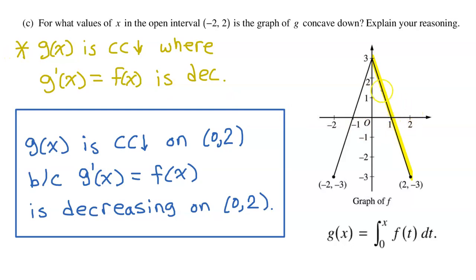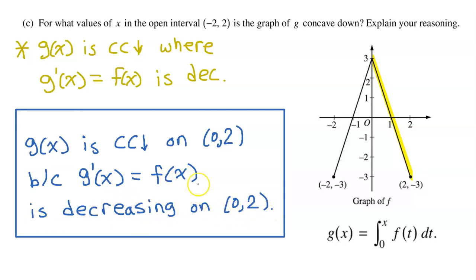We can see that f of x is decreasing on the interval from zero to two. So g of x is concave down on the interval from zero to two because g prime of x, which equals f of x, is decreasing on the interval from zero to two.